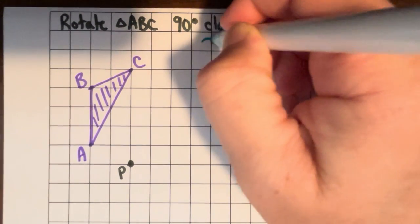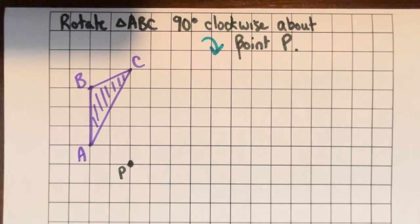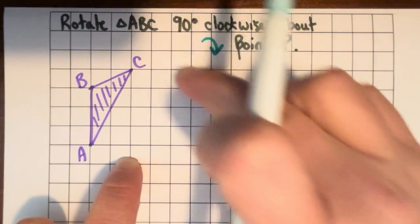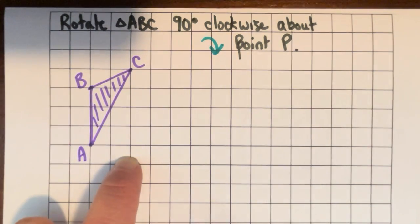so I'm going this way, quarter turn, about point P. So here's point P. This is going to be the part of the plane that's not going to move at all. We're going to trace the triangle and then we're going to hold this part still and turn the rest of the plane around that point.